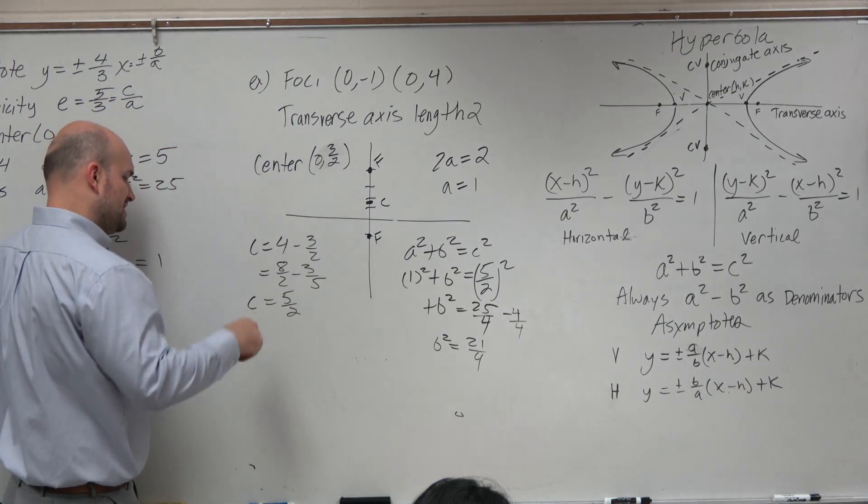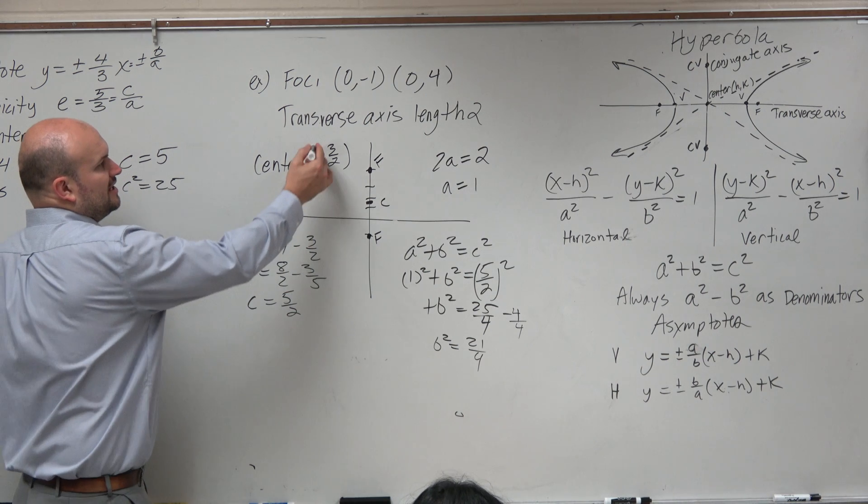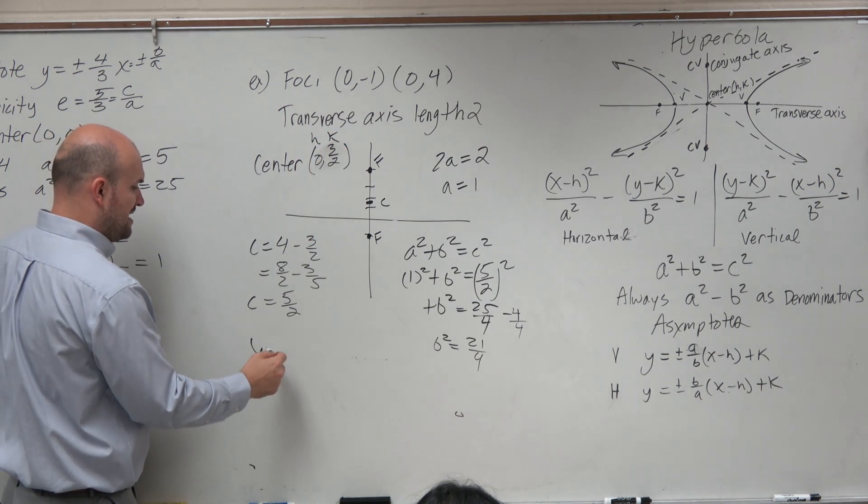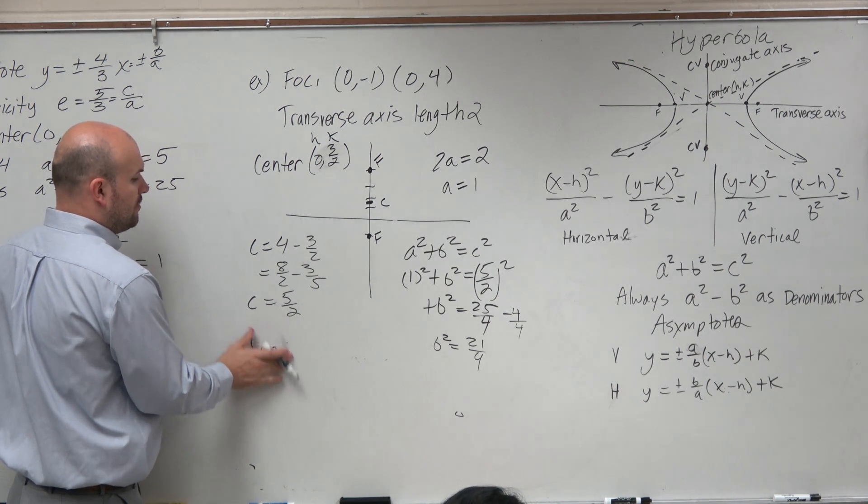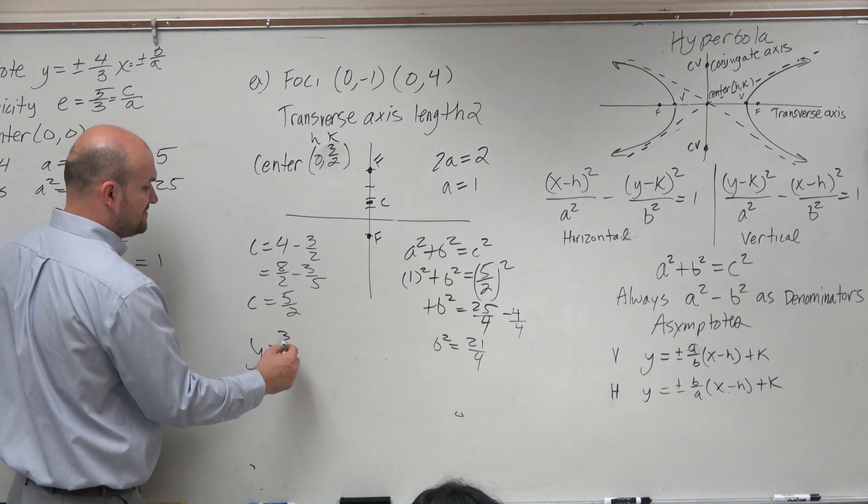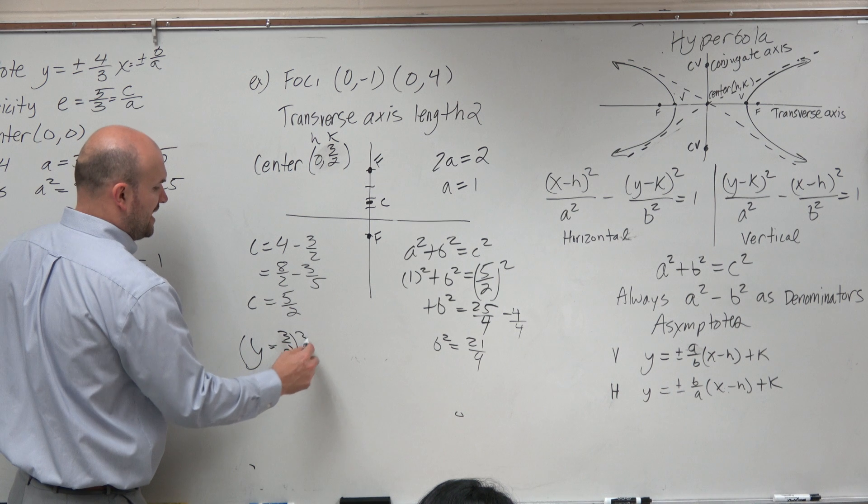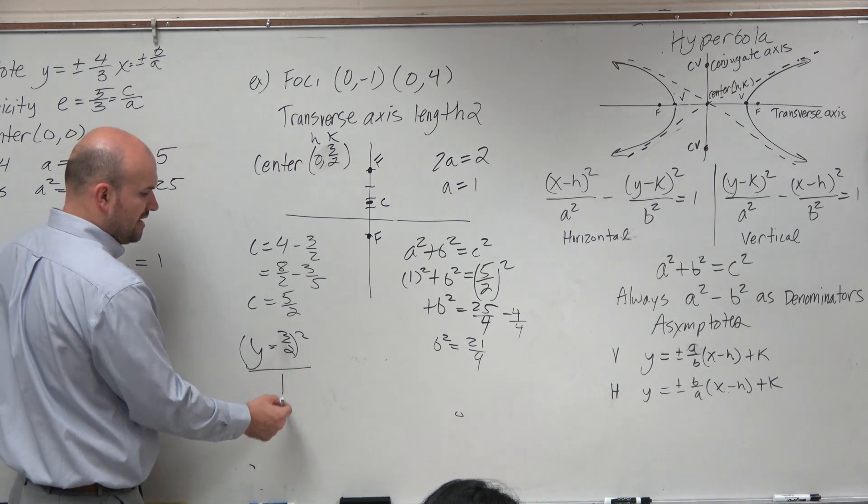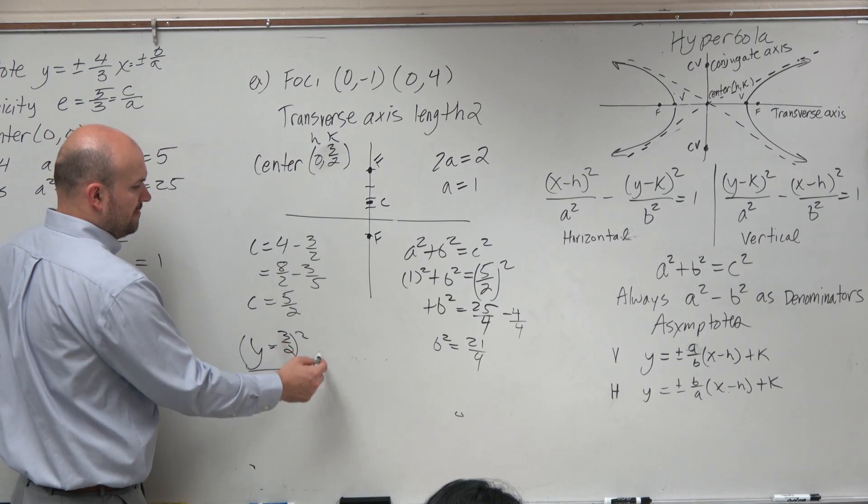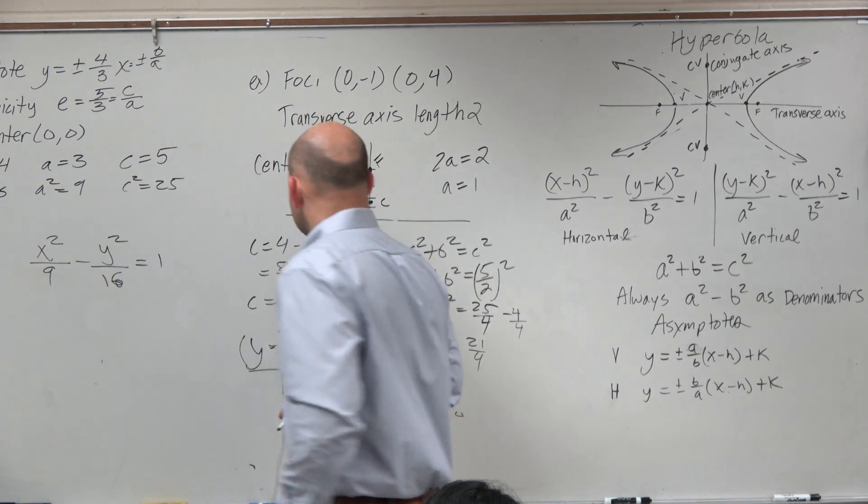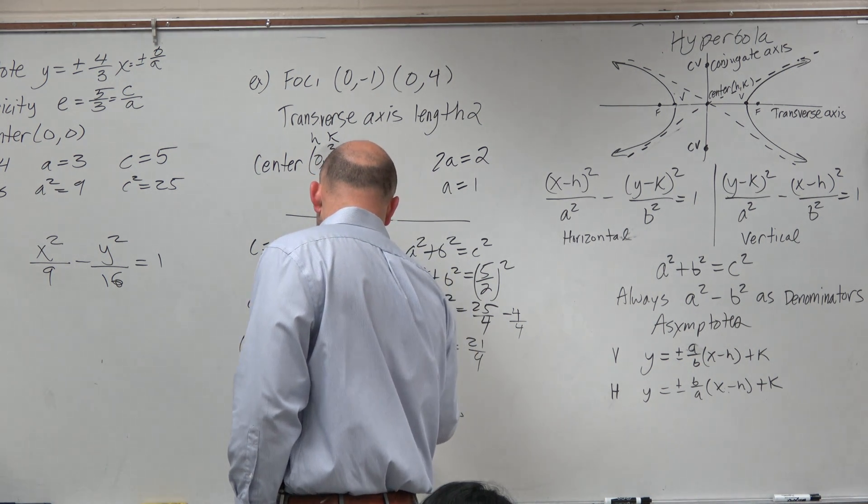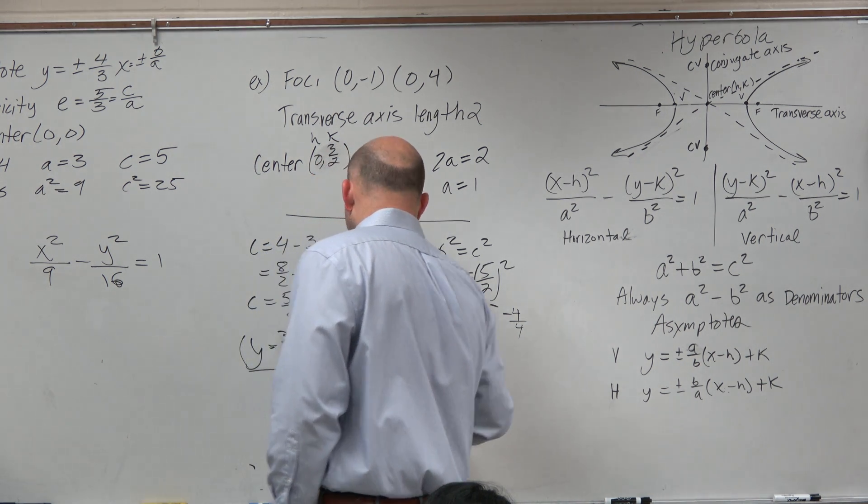So we have a vertical transverse axis. My center is my h and my k. So therefore, I'm going to do y minus k. So y minus k in this case is 3 halves squared. That has to be over my a squared, which is 1. So that one's kind of easy. Minus x minus h. h is 0, so we're just going to do x squared over b squared, which is 21 over 4 equals 1.